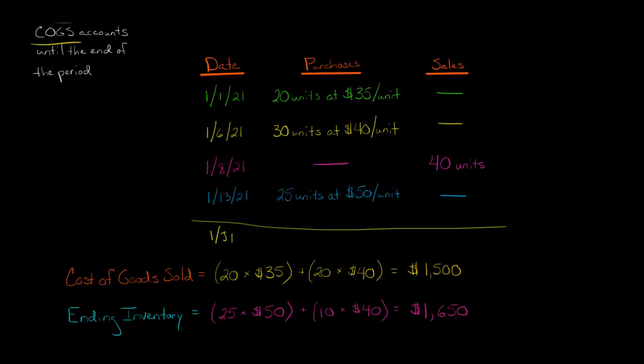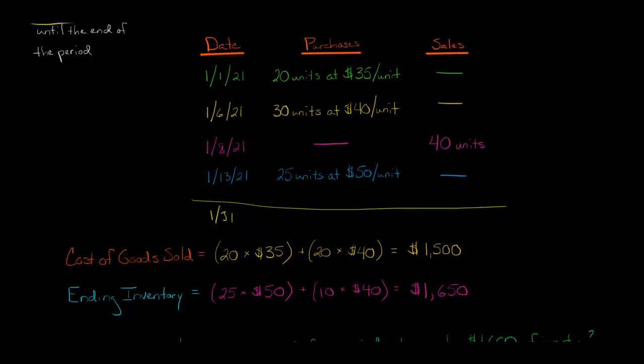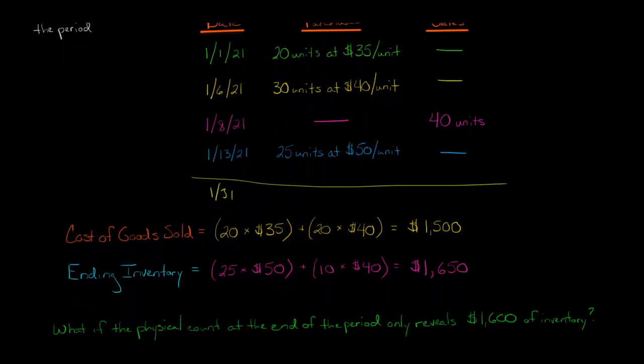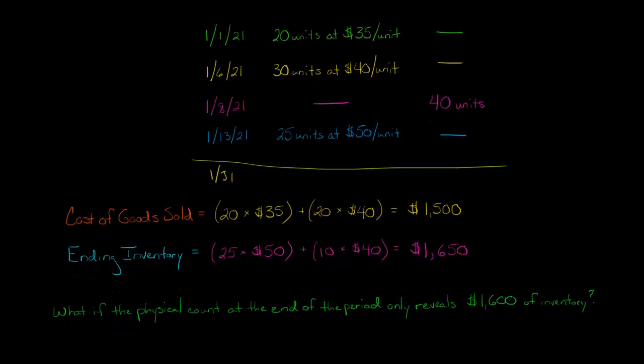Now, here's the catch. When you use a periodic inventory system, the whole idea is that at the end of the month, the end of the quarter, the end of the year, we're going to do a physical count of the inventory. We're actually going to go and count the board games. If you're a supermarket, you would count the fruit. We're going to do a physical count.